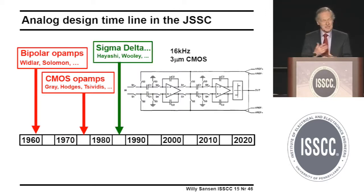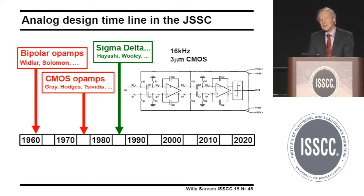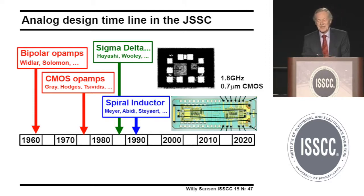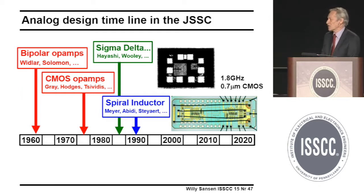Later, those filters were used in oversampling systems like sigma-delta. Sigma-delta was mentioned already today — one of its pioneers received a Kilby Award. Sigma-delta is a very different way of doing analog, with more signal processing involved. Using 3 micron CMOS and continuing to 0.7 micron CMOS allowing RF, doing analog RF using a spiral inductor — it works like an inductor, but also as a resistor, so you can do a lot better.